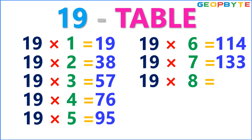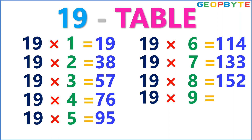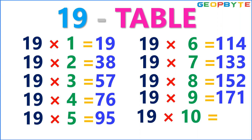19 eights are 152. 19 nines are 171. 19 tens are 190.